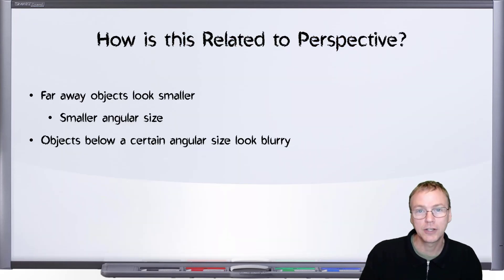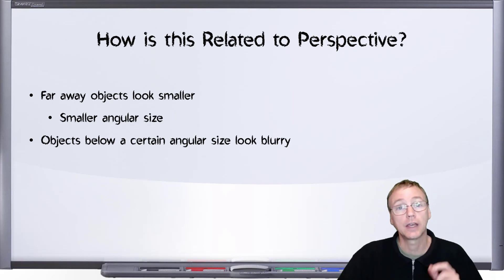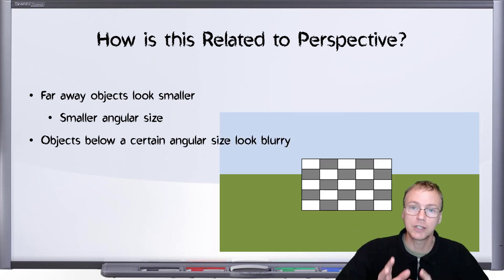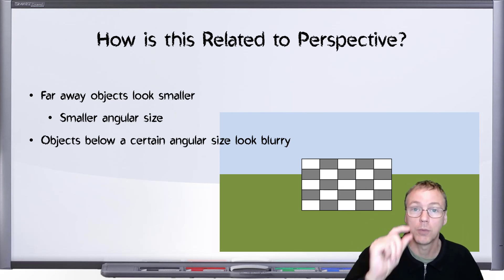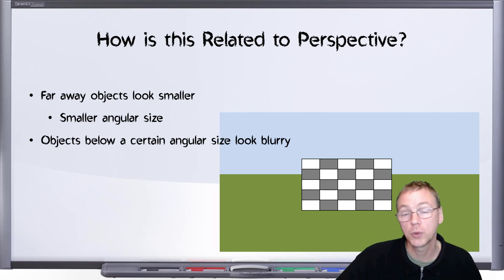So how is the Rayleigh criterion related to perspective? We have seen that as objects go into the distance, they appear to be smaller. And by that we mean smaller in angular size. Perspective gives us a formula by which we can calculate the angular size of any object given its physical dimension and the distance from the viewer.